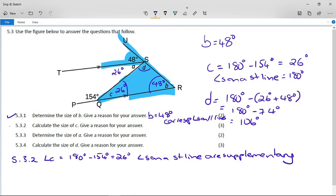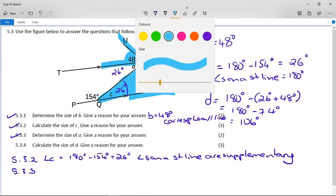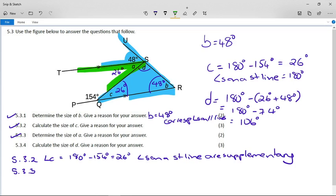So we've done 5.3.1, 5.3.2, 5.3.3. Determine the size of A. Remember we said, if we look at A, remember here, let's change the highlighter color. We said parallel line, transversal, parallel line, angle A and angle C are alternate angles. So we can say angle C equals angle A, which is equal to 26 degrees because alternate angles on parallel lines are equal.